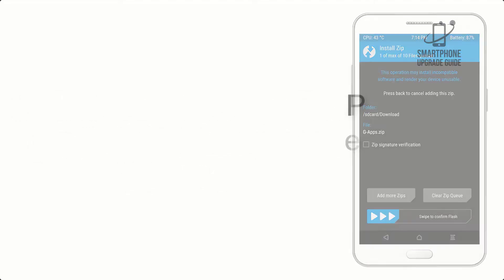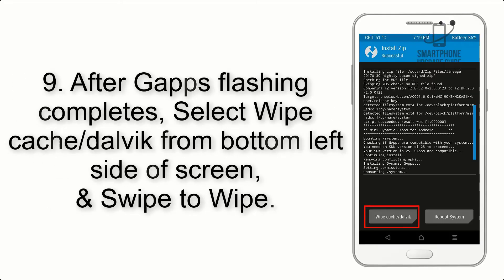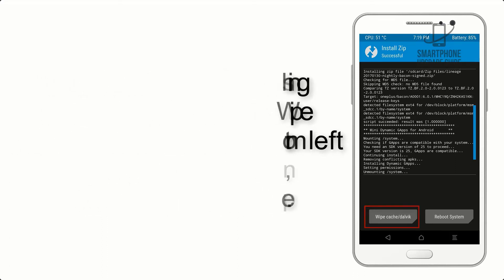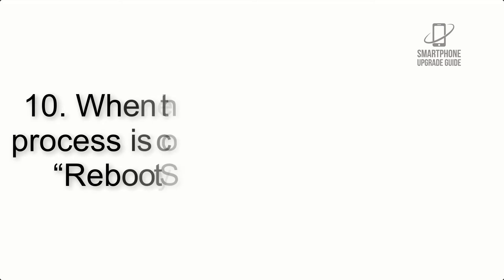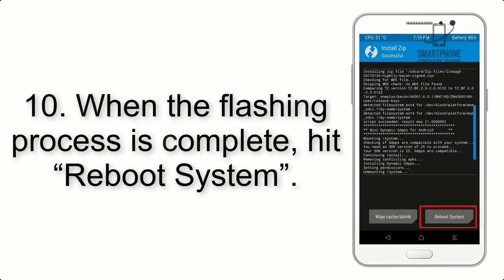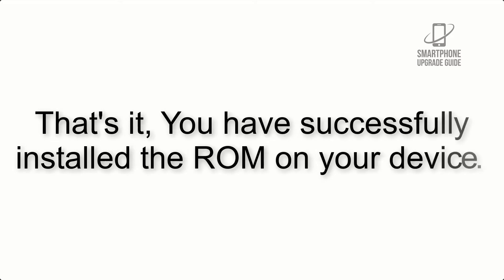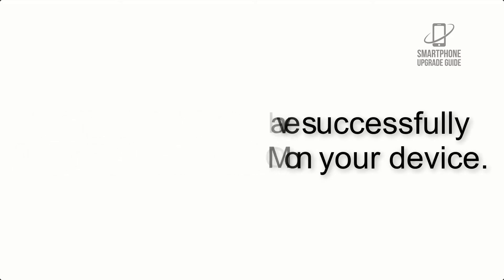Step 8: Flash the GApps zip package in the same manner. Step 9: After GApps flashing completes, select Wipe Cache and Dalvik from the bottom left side of the screen and swipe to wipe. Step 10: When the flashing process is complete, hit Reboot System. That's it — you have successfully installed the ROM on your device.